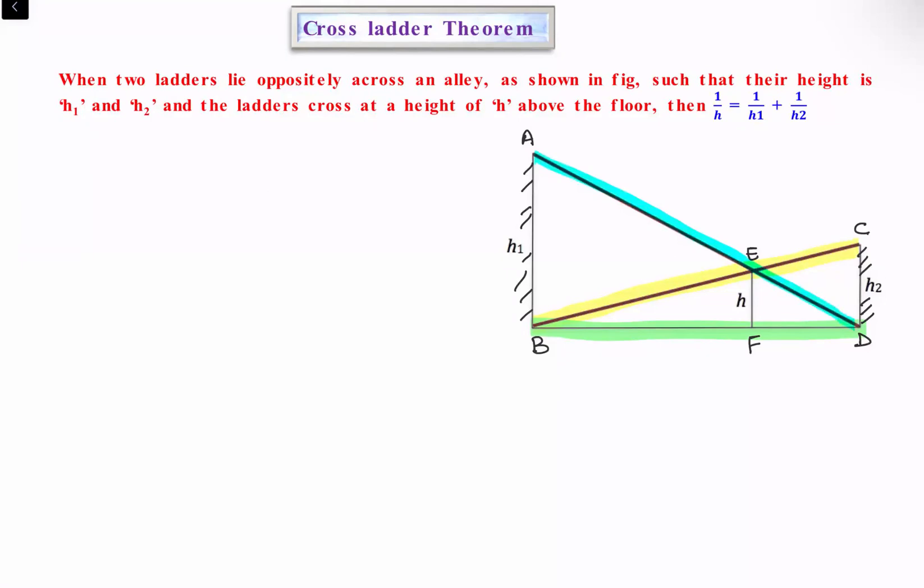We have to prove that if the ladders are touching the buildings at heights h1 and h2, they will cross each other at height h, and this value of h can be calculated by the formula: 1/h = 1/h1 + 1/h2. That's the cross-ladder theorem.